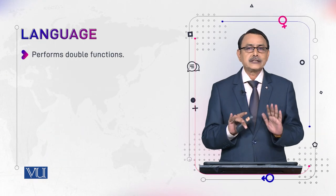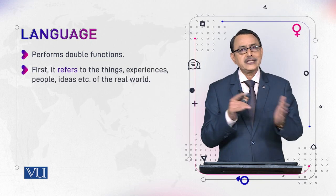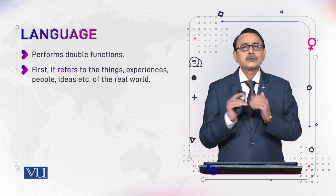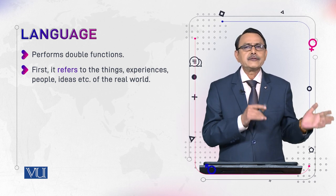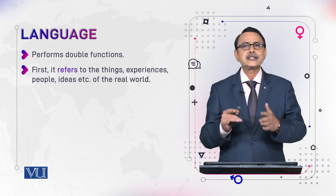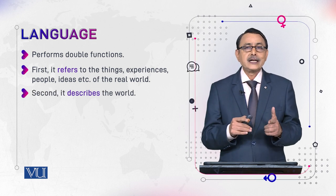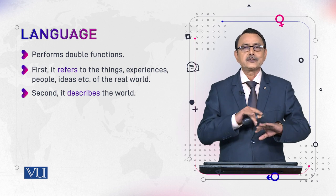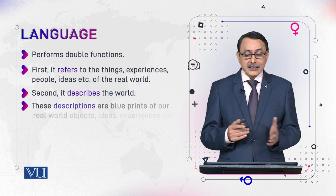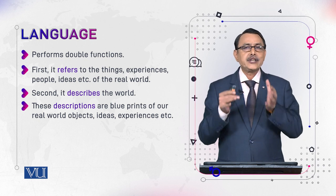Language performs double functions. First, it refers to things in the real world — a word refers to a book, a word refers to a table, a word refers to a girl — real objects, real things, real persons. This is its referential function. The other function is the descriptive function: language also describes things and persons around us.